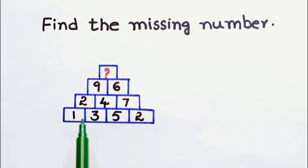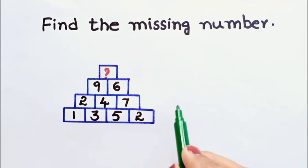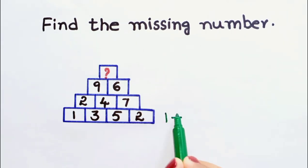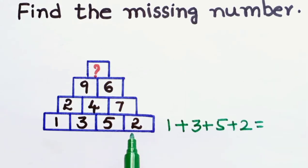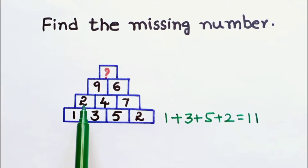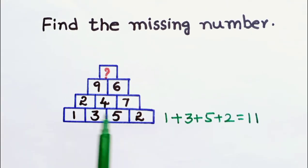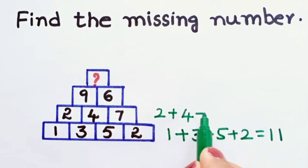In the first row, the numbers are 1, 3, 5, and 2. Let us add all these numbers. Children, tell me: what is the sum? 1 plus 3 is 4, 4 plus 5 is 9, 9 plus 2 is 11. Now let us add all the numbers in the second row: 2 plus 4 plus 7.